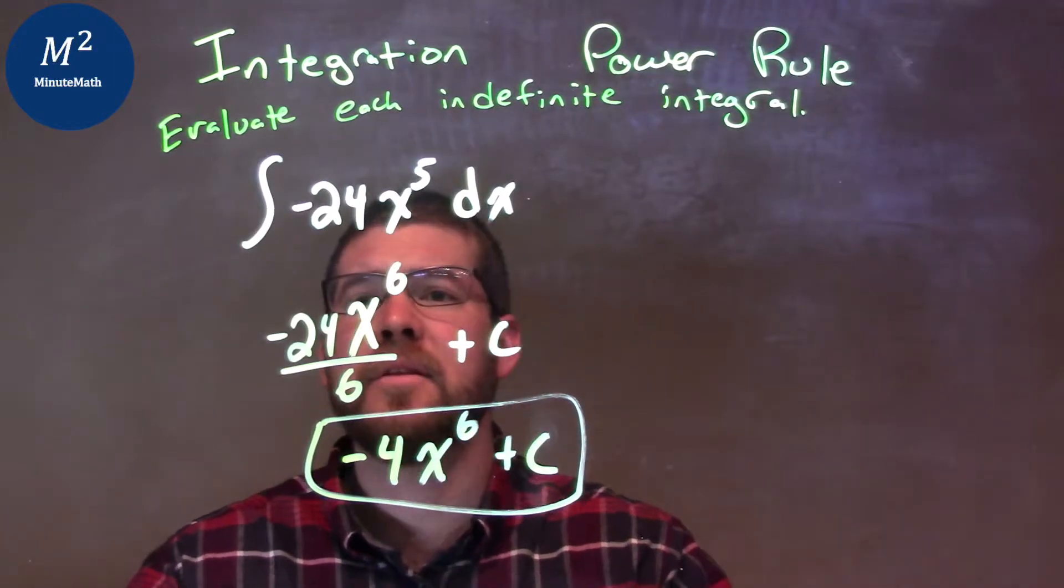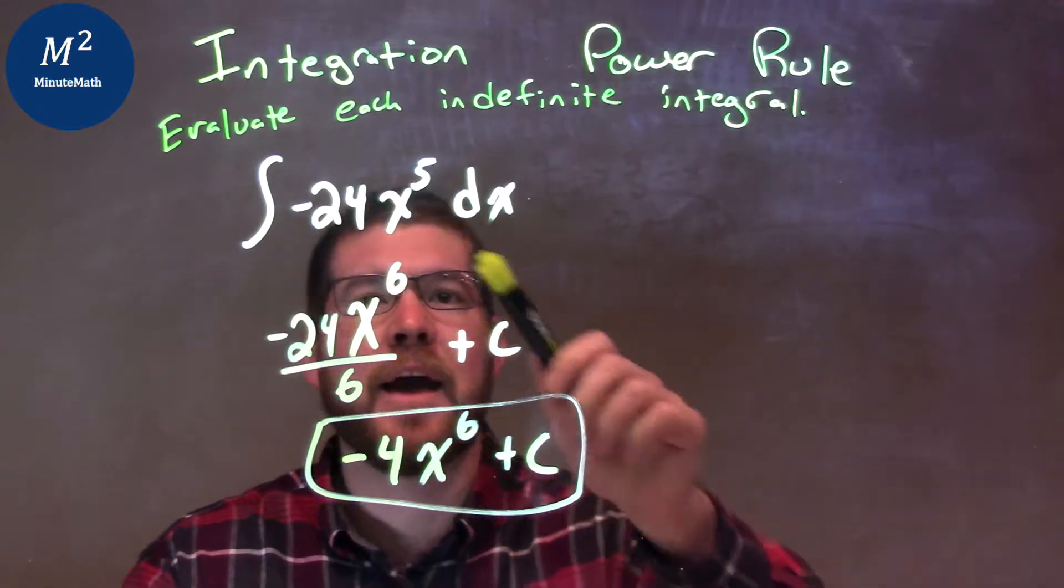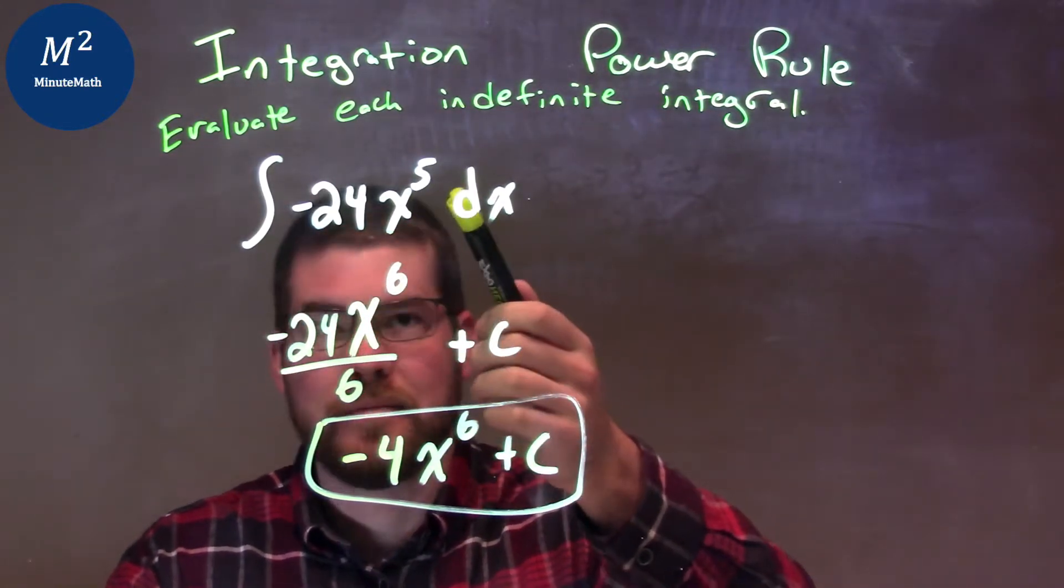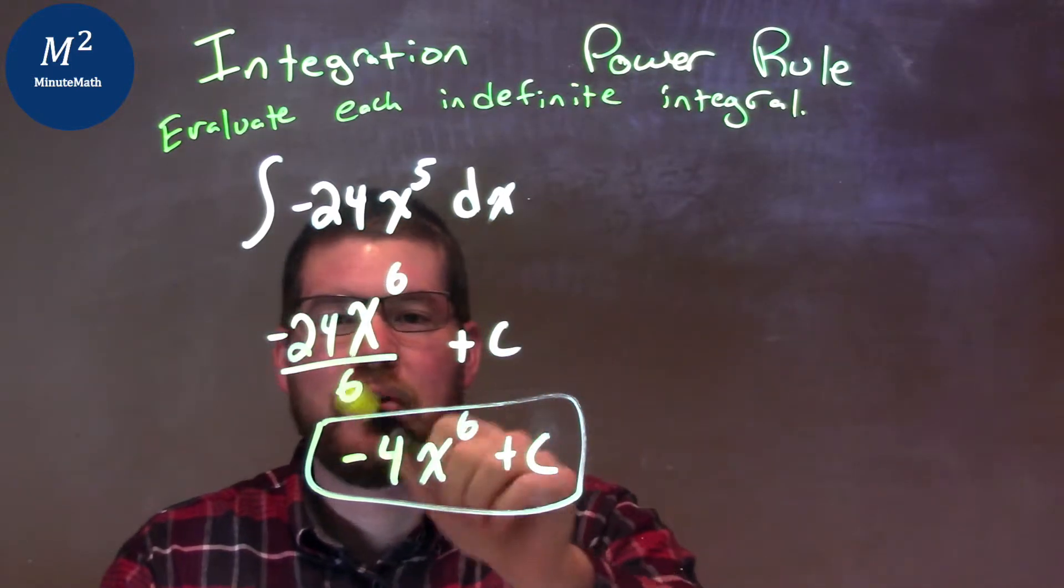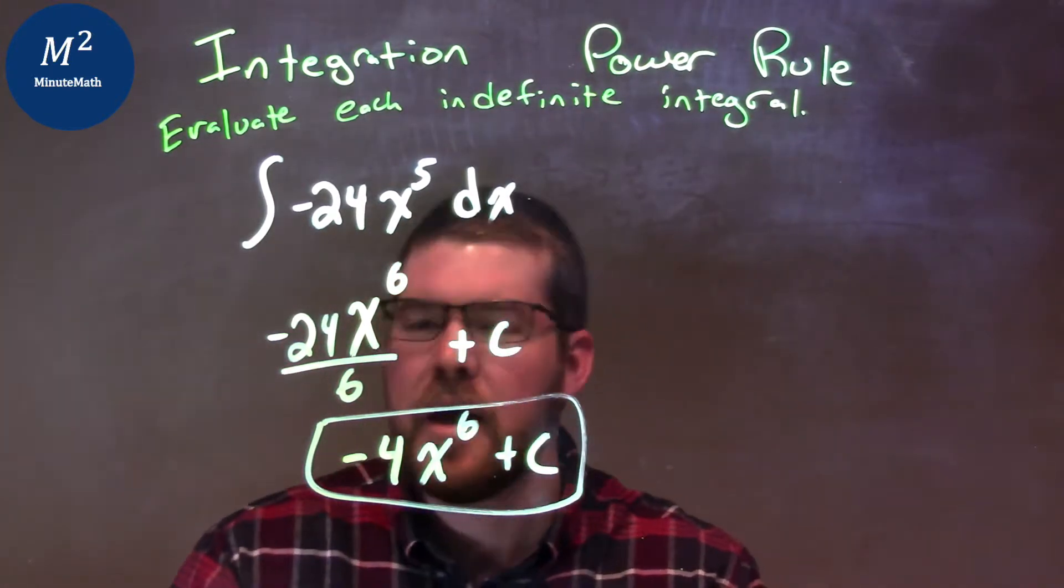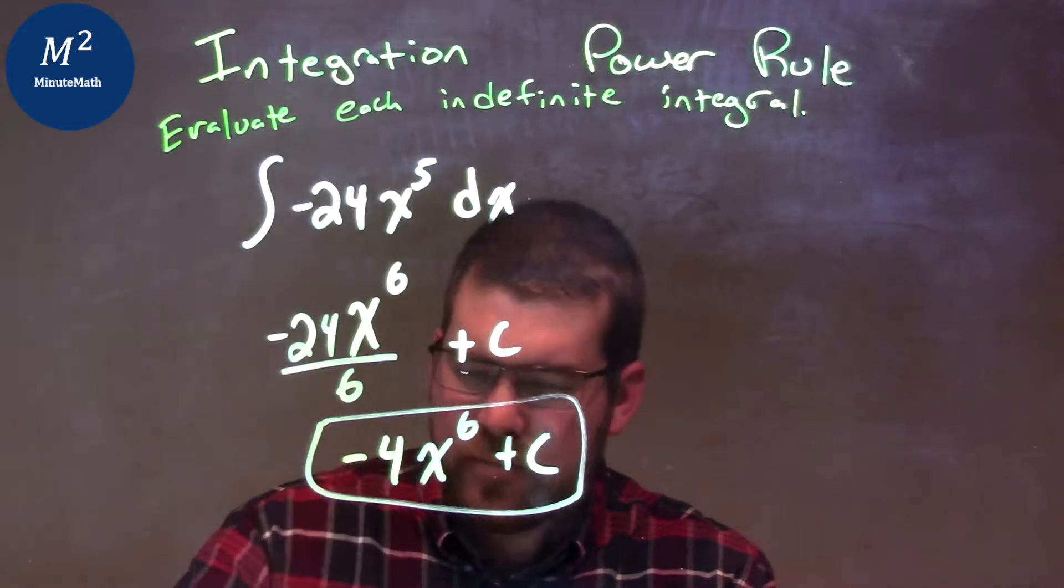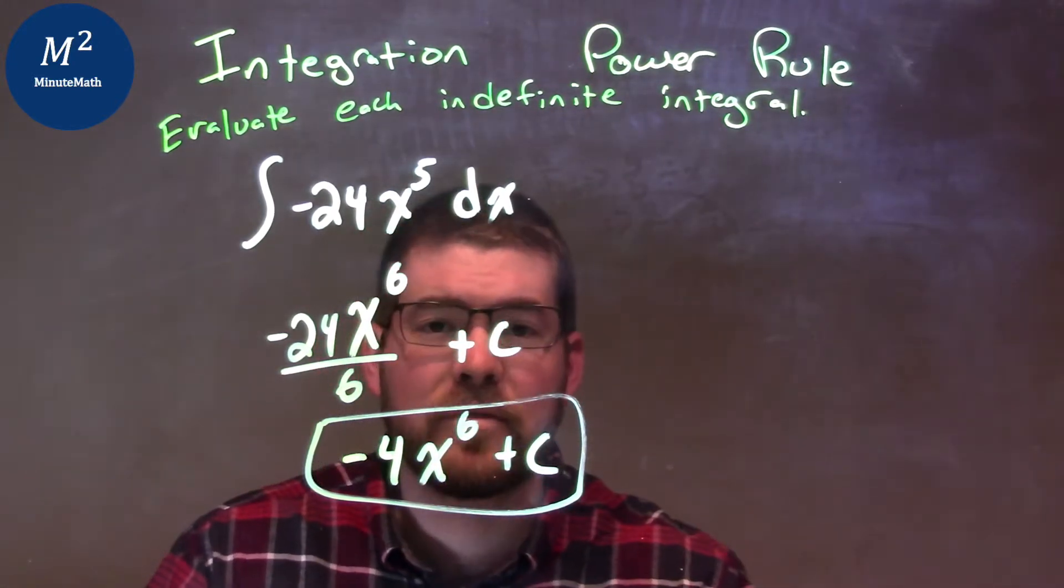So, let's recap. We're given the integral of negative 24x to the 5th dx. I added my exponent by 1, so I add 5 to get to the 6th power, 5 plus 1. And then divide by that exponent. I leave everything basically all the same. I add my plus c. I simplify: 24 and 6 is negative 4. So, again, my final answer, which is negative 4x to the 6th plus c.